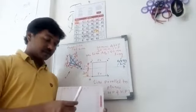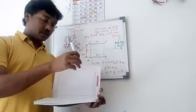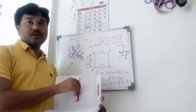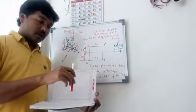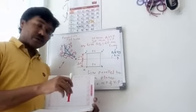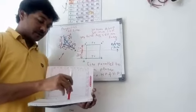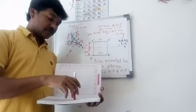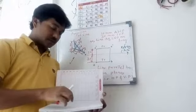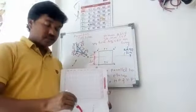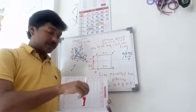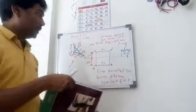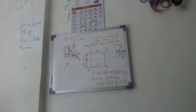Now we will take the next case: suppose the line is perpendicular to HP and parallel to VP. In that case, when you are looking from the top, you will get simply a point as the top view. In the front view, you will get a line equivalent to the true length.